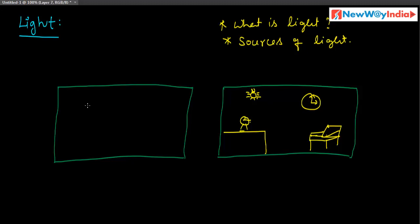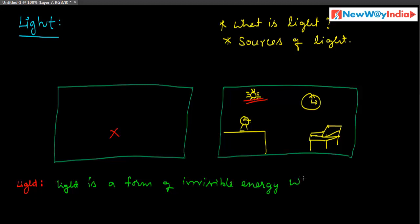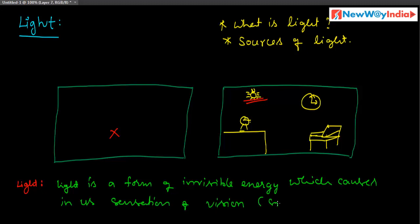If there is no light, you can't see any objects. But if you have a light source, you can see different objects in that room. So light causes the sensation of vision. The definition of light: light is a form of invisible energy which causes sensation of vision.